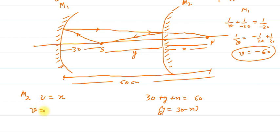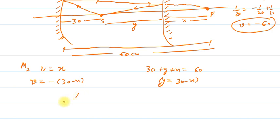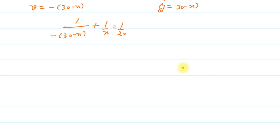Now we will go to the expression. We take v, which is basically -(30 - x), because the image ultimately must form behind at the source, so we have to follow sign conventions. Now we simply use the mirror formula for M2. 1/v, where v = -(30 - x), and u = x, equals 1/20 because the second mirror is convex, so focal length is positive.